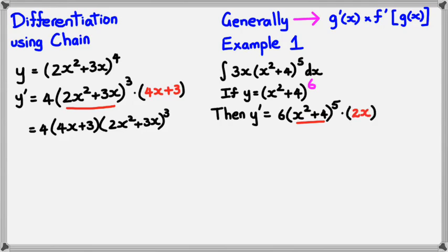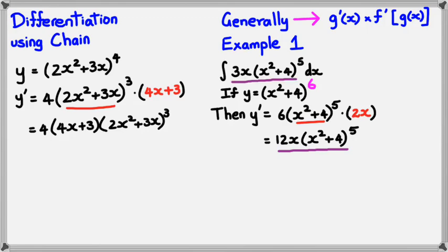Simplifying this, y dash equals 12x times (x squared plus 4) to the power of 5. Now I've got 12x times (x squared plus 4) to the power of 5, but the original question wanted me to integrate 3x. The way I can get from 12x to 3x would be to divide by 4, because 12 divided by 4 equals 3. So I can rewrite the whole question as the integral of 12x...